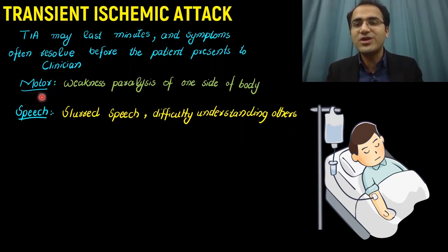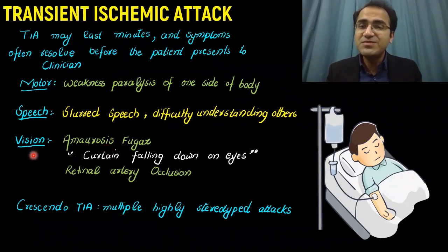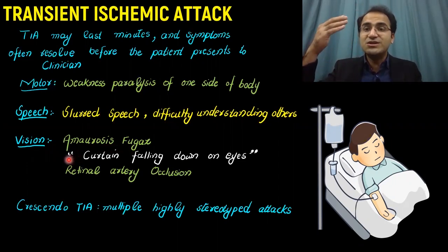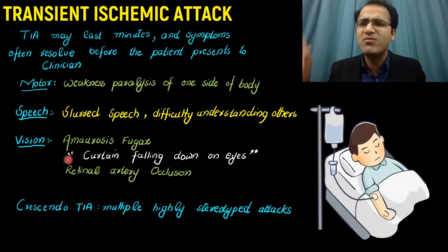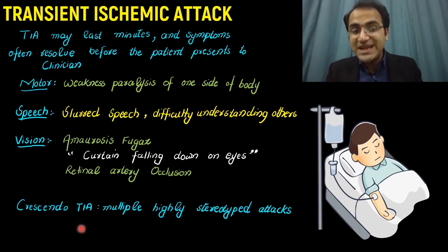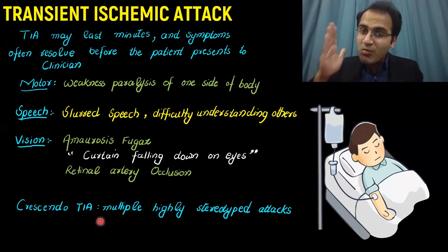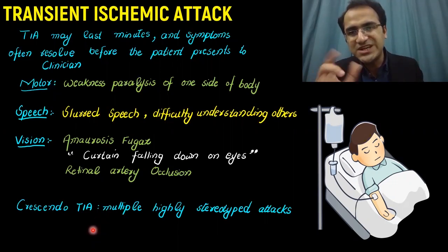The patient might present with a motor complaint — weakness and paralysis of one side of the body. The patient might complain of impaired or slurred speech and difficulty understanding others. The patient may present with a vision problem called amaurosis fugax, where they report that all of a sudden it felt like a curtain was falling down on their eyes and they were totally blind. This occurs due to retinal artery occlusion. Patients can even have crescendo TIAs, meaning multiple attacks of TIA one after another.